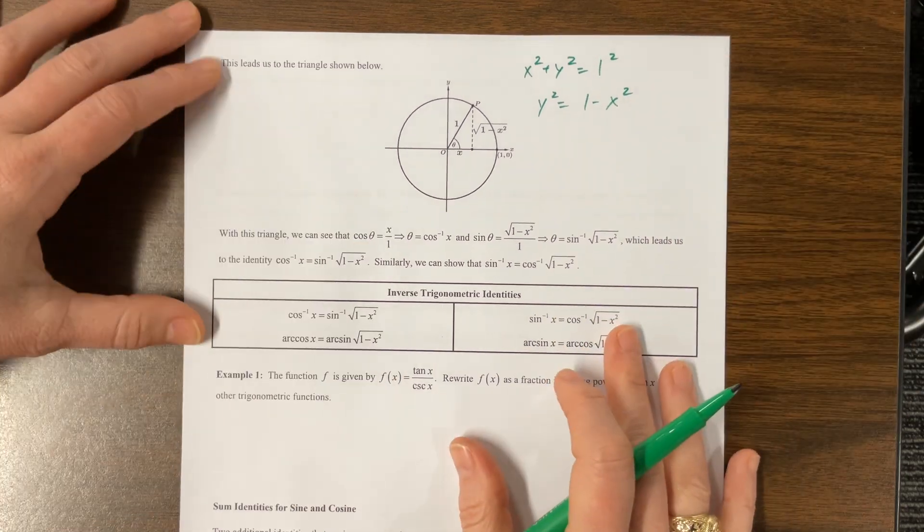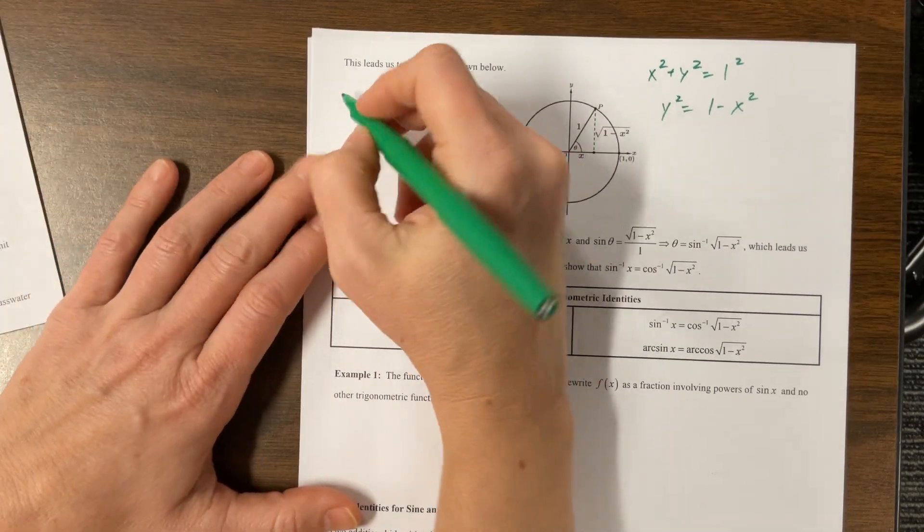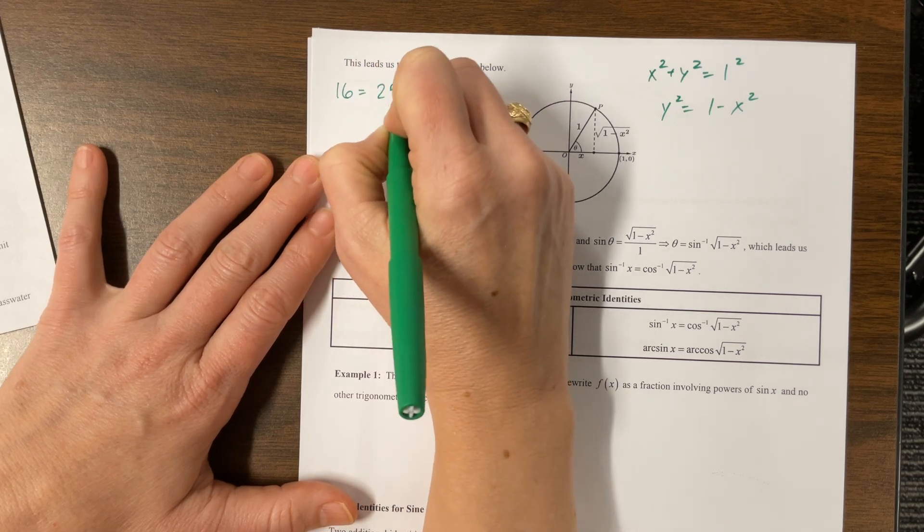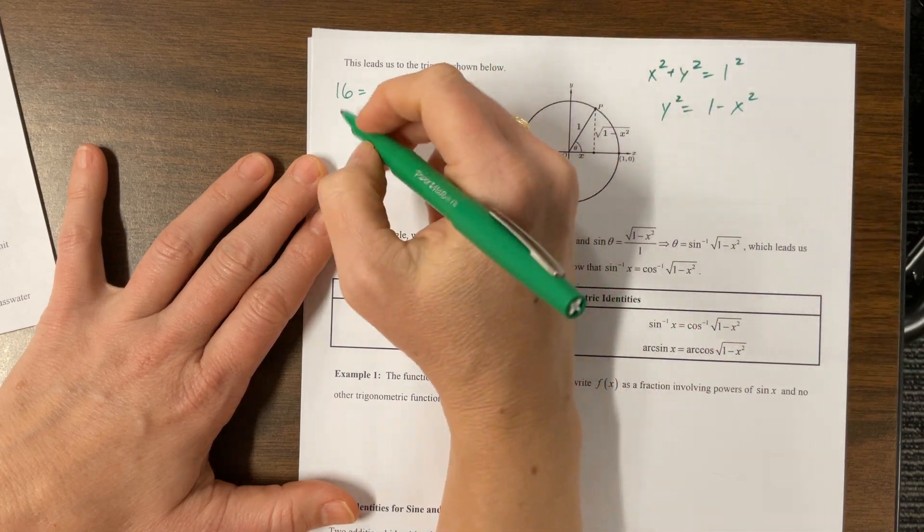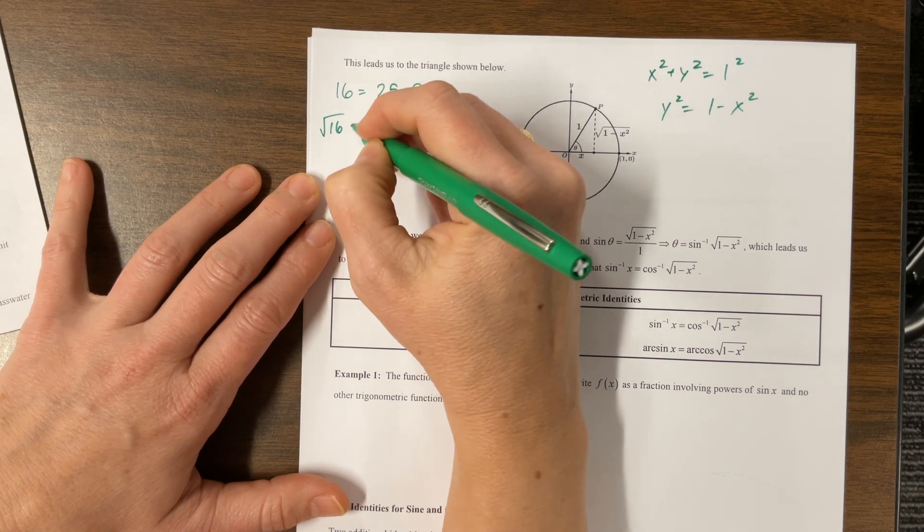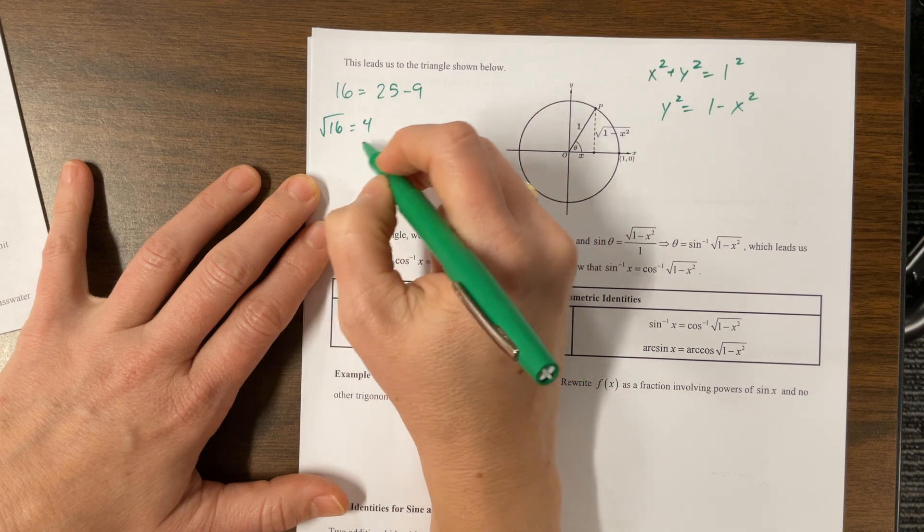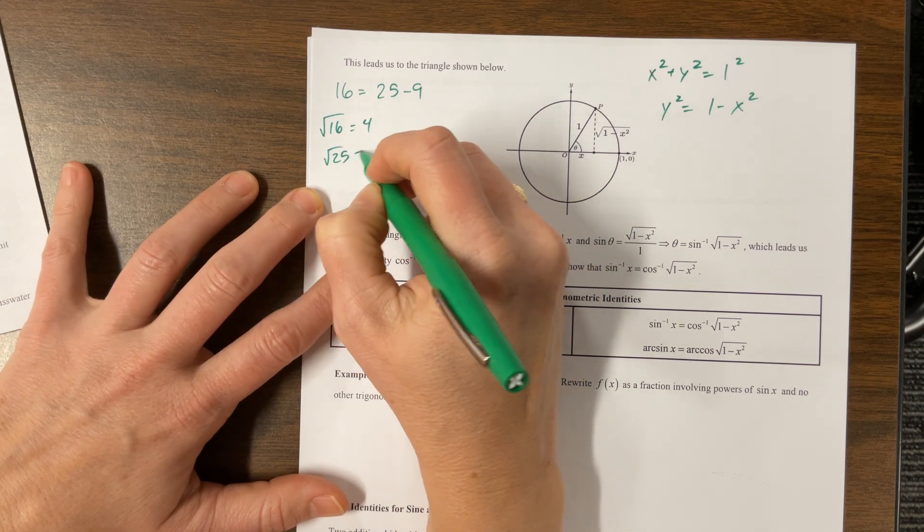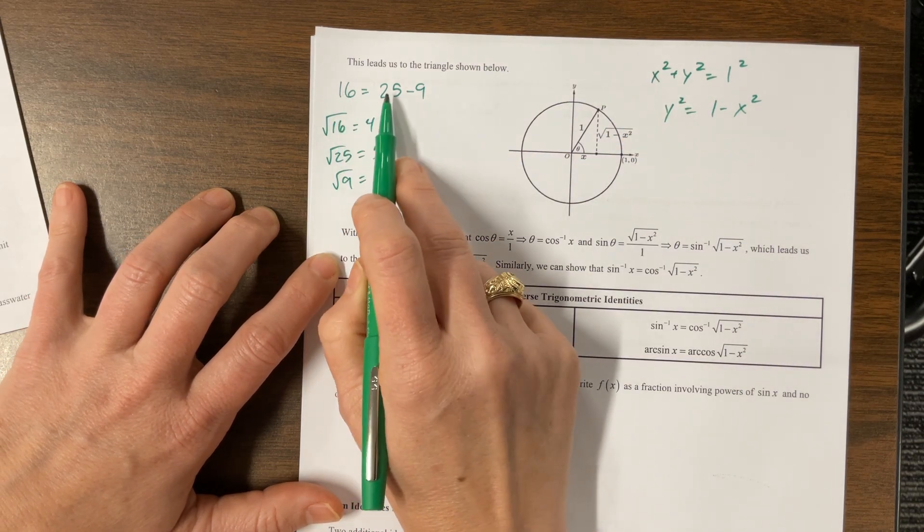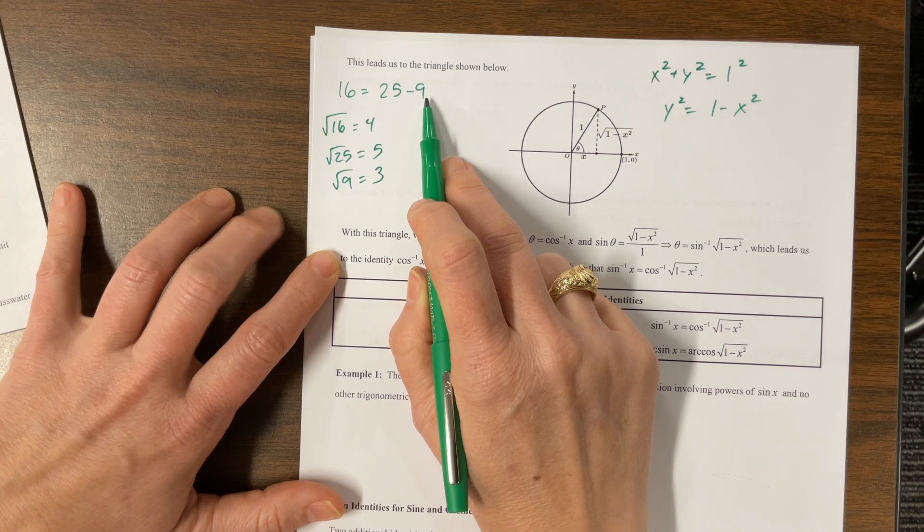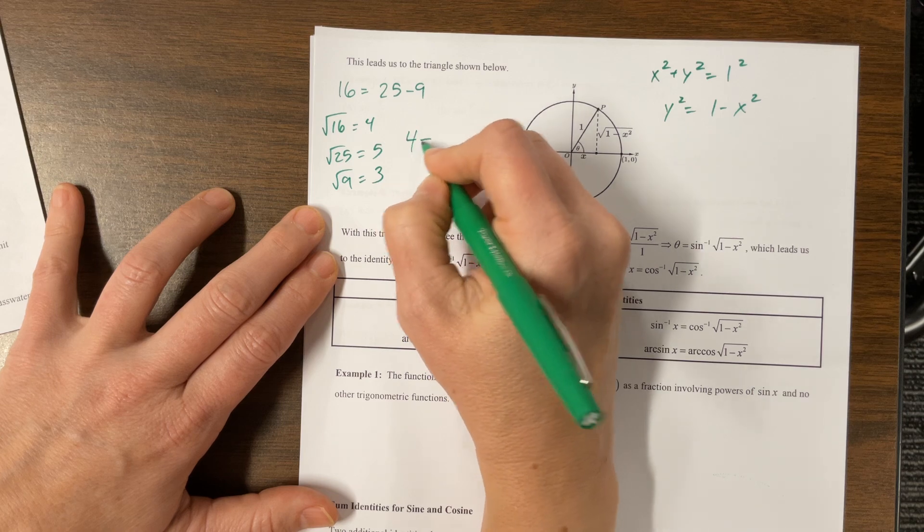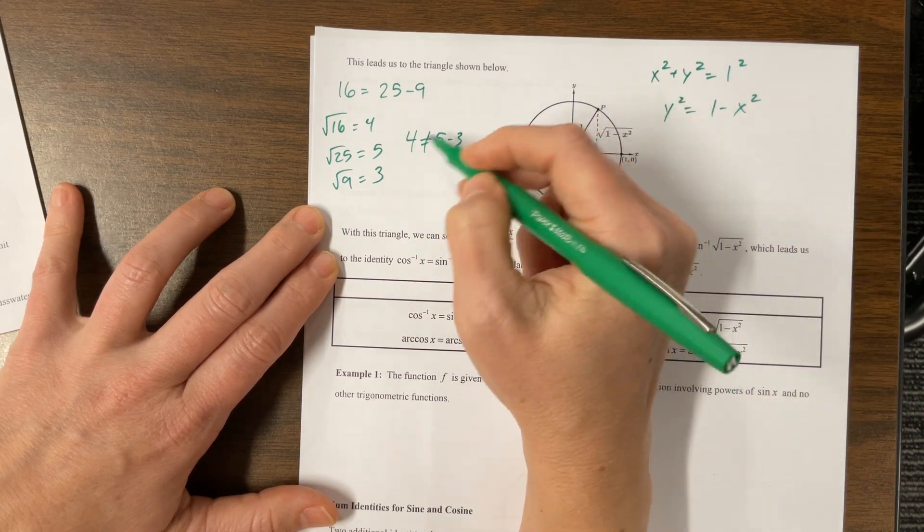No, no, no, no, no. Think about it like this. If I have, that's like saying that 16 is equal to 25 minus 9, right? Okay, so that's a true statement. But then you're telling me if I say, well, then the square root of 16, the square root of 16 is equal to 4, the square root of 25 is equal to 5, the square root of 9 is equal to 3. So if you're trying to tell me the square root of 16 is equal to the square root of 25 minus the square root of 9, then you're trying to tell me that 4 equals 5 minus 3, and 4 does not equal 5 minus 3.